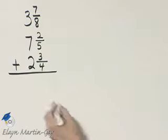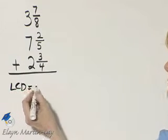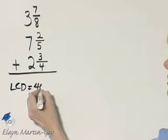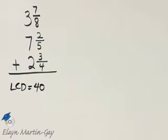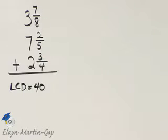What is the least common denominator? I'll write it over here. The least common denominator is 40. So, let's go through now, and let's rewrite each mixed number so that the fraction part has a denominator of 40.